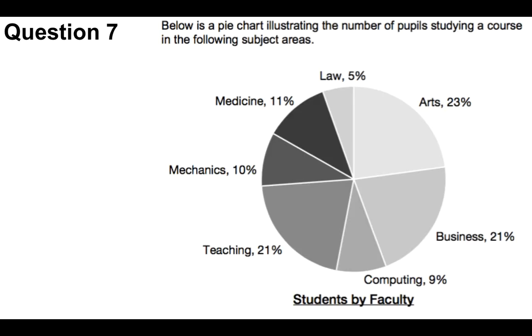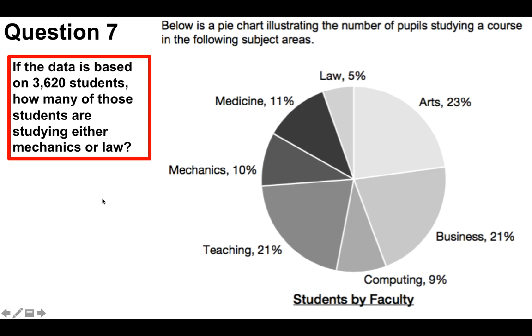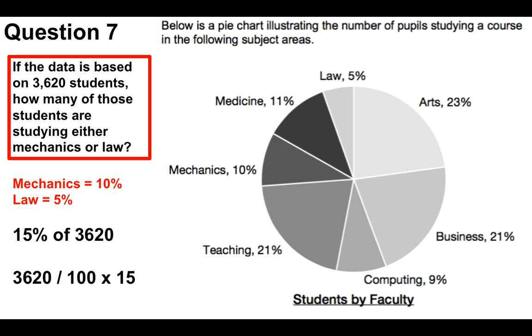Question number seven. We've got a pie chart here. It looks a bit confusing upon initial inspection, but it's straightforward. Below is a pie chart illustrating the number of pupils studying a course in the following subjects: medicine, law, arts, business, computing, teaching, and mechanics, split into their different percentages. The question is, if the data is based on 3,620 students, how many of those students are studying either mechanics or law? So we have to look at mechanics, which is 10%, and law, which is 5%, and that equals 15% total. So we need to work out 15% of 3,620. We do that by going 3,620 divided by 100 times 15, and the answer is 543. You should be able to do that relatively quickly with a calculator.